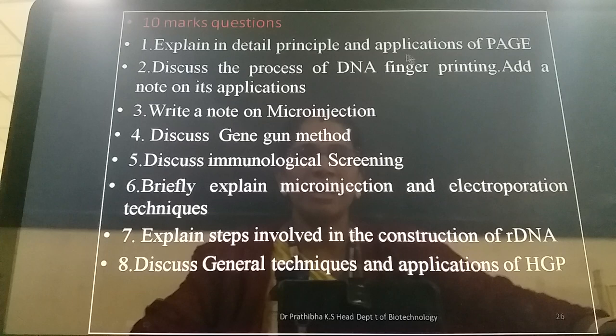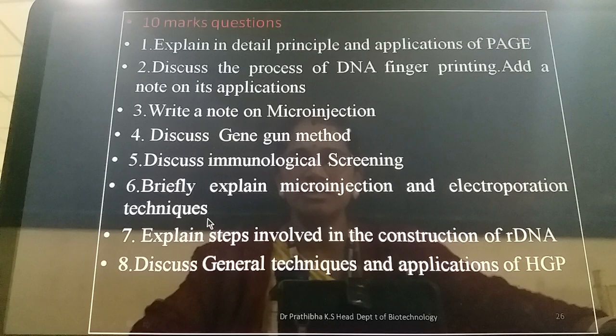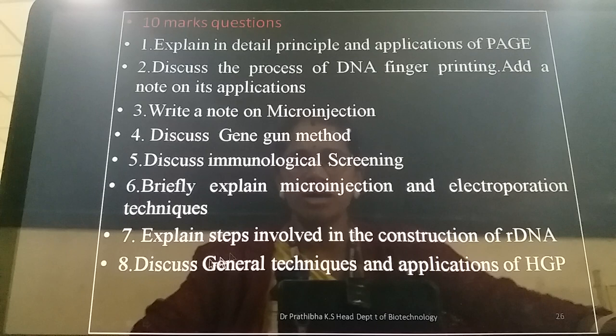Now let us focus on 10-mark questions: explain in detail the principle and applications of PAGE; discuss the process of DNA fingerprinting and add a note on its applications; write a note on microinjection; discuss the gene gun method — also known as particle bombardment or micro-projectile technique; discuss immunological screening; briefly explain microinjection and electroporation techniques; explain steps involved in the construction of recombinant DNA; and discuss general techniques and applications of the human genome project.